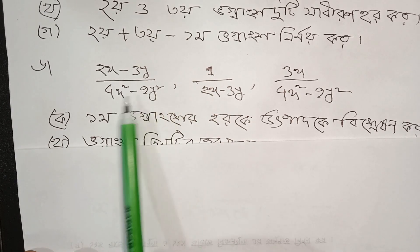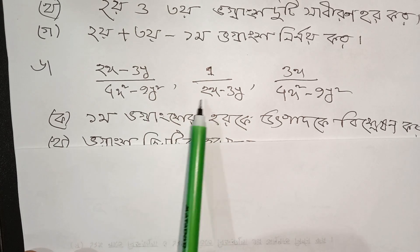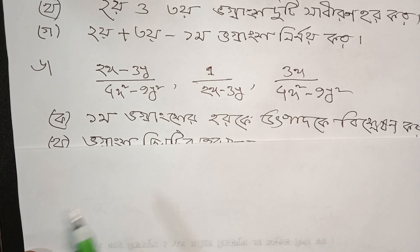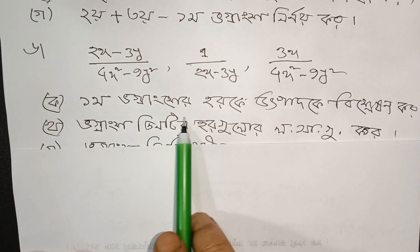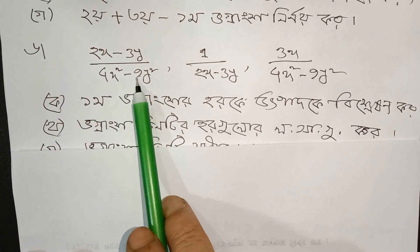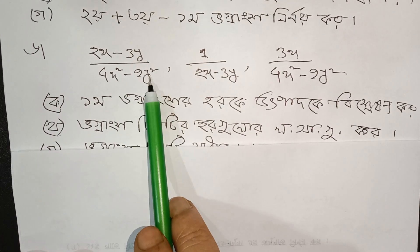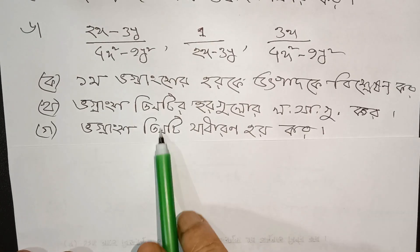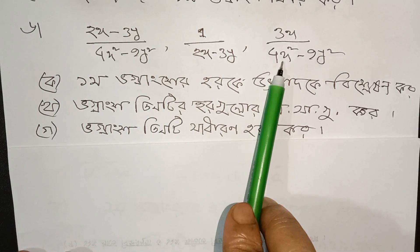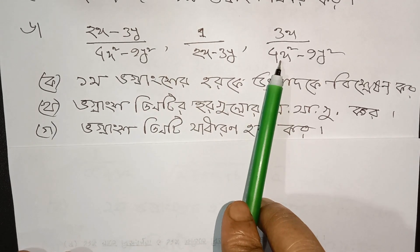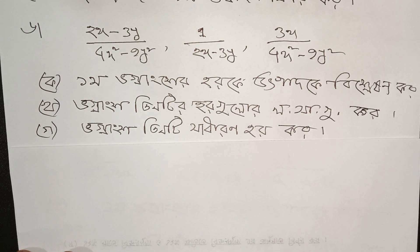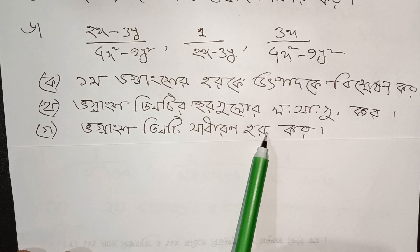2x minus 3y by 4x squared minus 9y squared, and 3x by 4x squared minus 9y squared, and 1 by 2x minus 3y. We work with 4x squared minus 9y squared throughout this example.